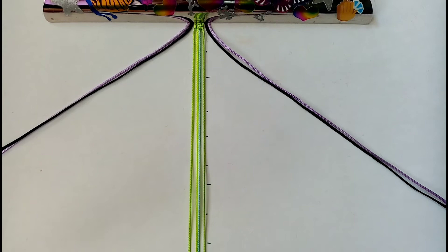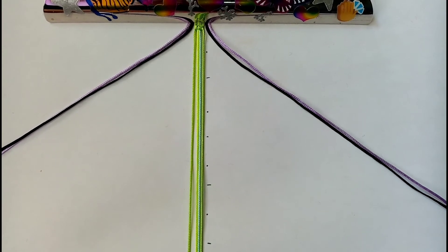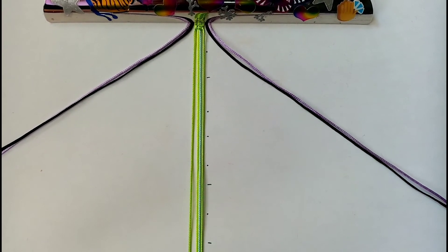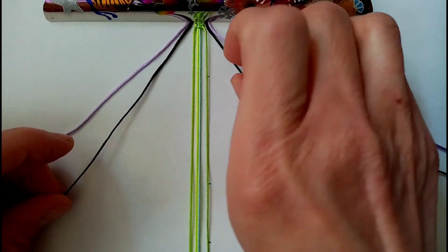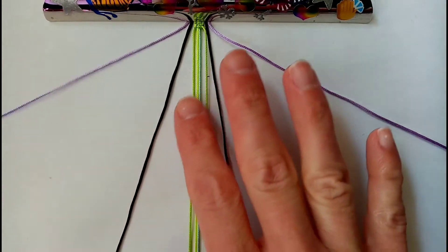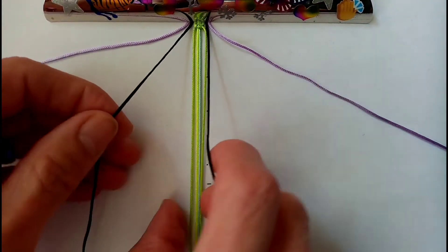Once you have done that you want to put the cords you just used as your working cords with the other holding cords and you want to take the next color in your sequence, so you want the cords in positions 2 and 7, and you want to work a square knot over the ones in between.